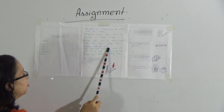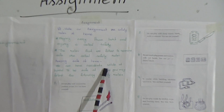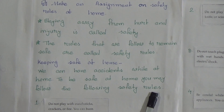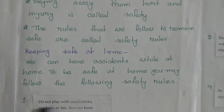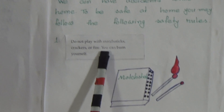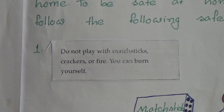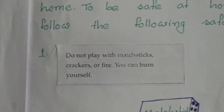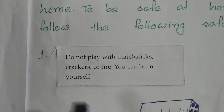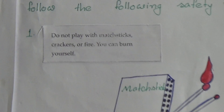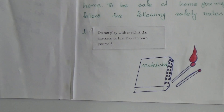Keeping safe at home. We can have accidents while at home. To be safe at home, you may follow the following safety rules. Number one: do not play with matchsticks, crackers, or fire — you can burn yourself. Here is the picture of a matchstick. We do not play with things like matchsticks, fire, or crackers because if we play with them, we can get burned.